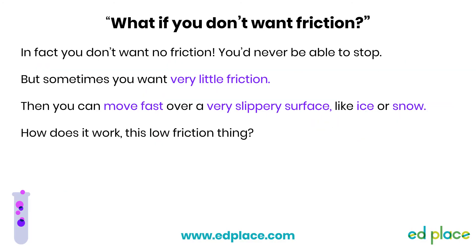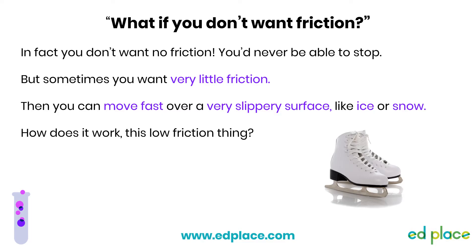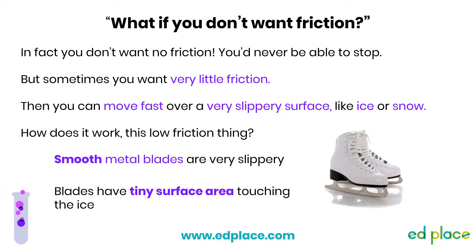However, sometimes you want very little friction, but you'd never want none. If you were sledging down a hill without friction, you wouldn't be able to stop. If you're moving over a slippery surface like ice or snow, you probably want to move fast, and so you want low friction. How does that work? Well, take these ice skates. The blades are in contact with the ice and they're made of smooth metal - that creates very little friction. Not only that, but the blades are very narrow, so there's only a tiny area touching the ice. These both ensure little friction and so lots of speed.